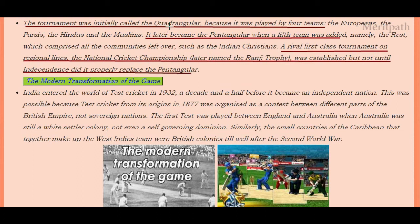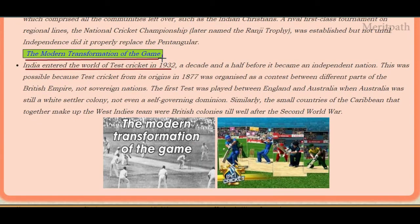The tournament was initially called the Quadrangular because it was played by four teams: Europeans, Parsis, Hindus, and Muslims. It later became the Pentangular when a fifth team was added — the Rest, comprising all remaining communities such as Indian Christians. A rival first-class tournament on regional lines, known as the National Cricket Championship and later named the Ranji Trophy, was established, but not until independence did it properly replace the Pentangular.